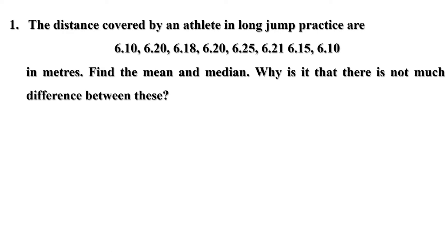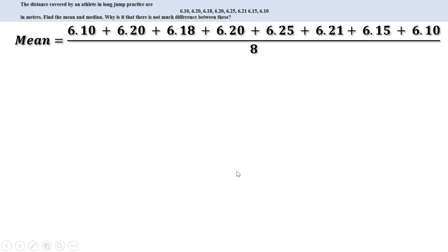Let us find the mean first. There are 8 scores. To find the mean, we add all 8 scores and divide the sum by 8. When we add all these scores together, we get 49.39. Divided by 8, we get 6.17 meters. The mean of these scores is 6.17 meters.